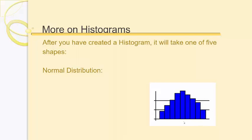We're going to study this distribution in a lot of detail in the coming weeks. One of the main properties of a normal distribution to take away now is that most data is centered — the most data occurs right around the center. As you get away from the center, there are fewer and fewer observations both above and below.